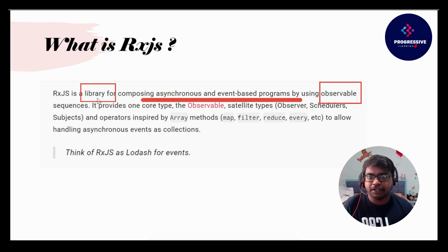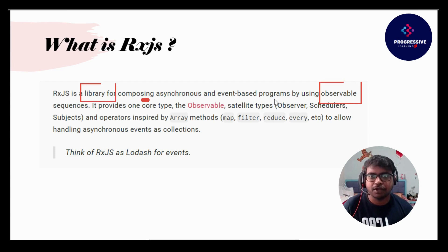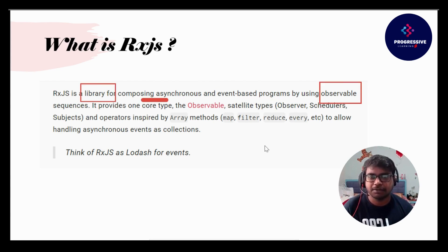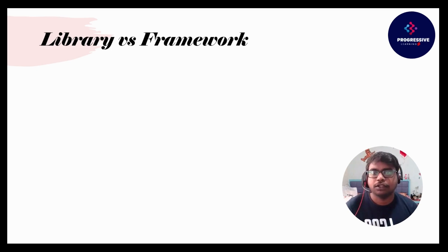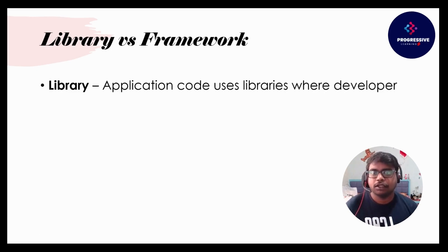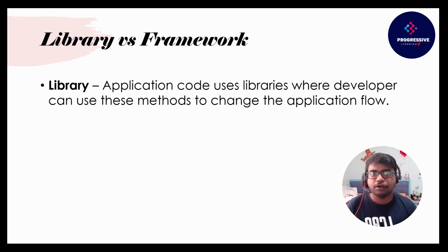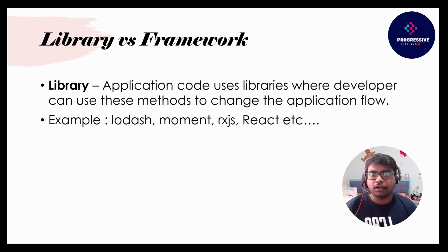RxJS is a library — not a framework — for composing asynchronous and event-based programs. A library is application code where developers can use utility methods to control the application flow and make coding simpler. Some examples of libraries are Lodash, Moment, RxJS, and React.